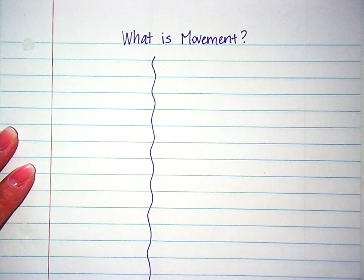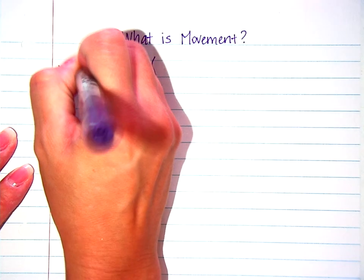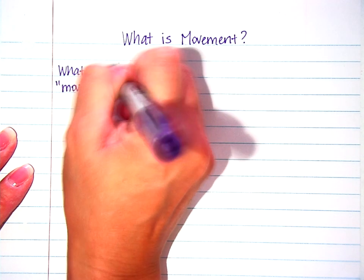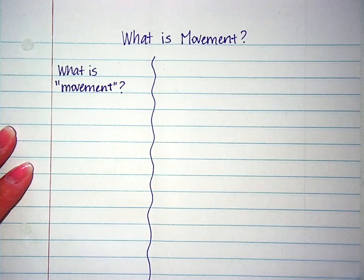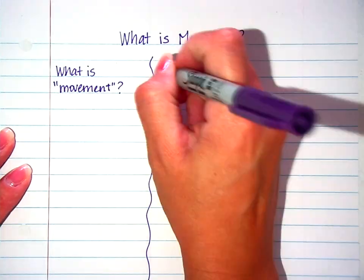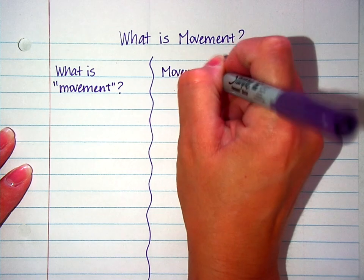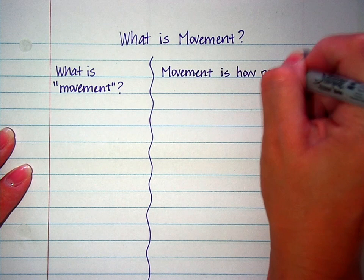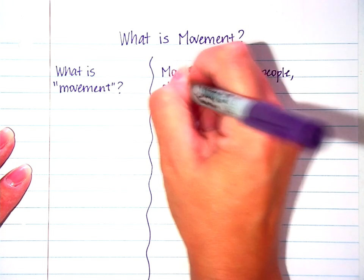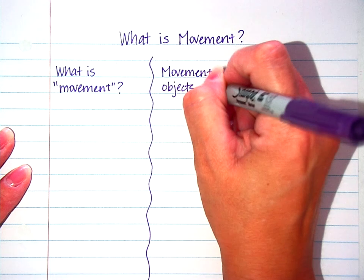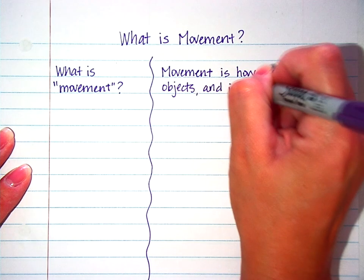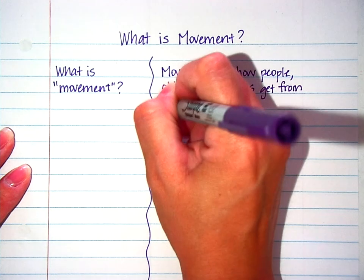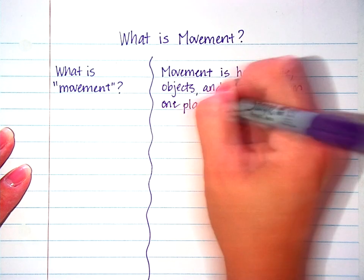On the left-hand side of our paper, we'll go ahead and write the focus question, what is movement. And on the right-hand side, we're going to write down the definition. Movement is how people, objects, and ideas get from one place to another.